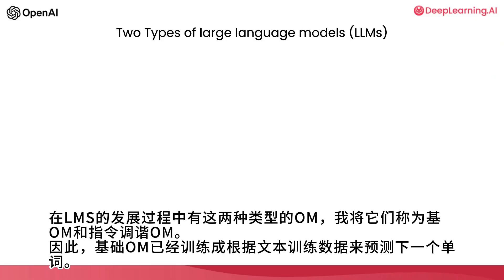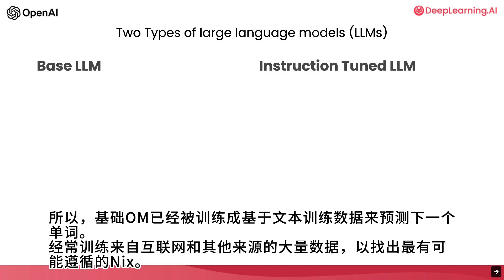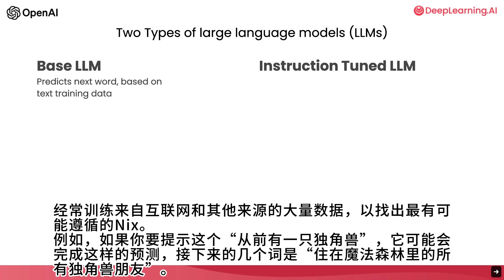In the development of large language models, or LLMs, there have been broadly two types of LLMs, which I'm going to refer to as base LLMs and instruction-tuned LLMs. Base LLMs have been trained to predict the next word based on text training data, often trained on a large amount of data from the internet and other sources to figure out what's the next most likely word to follow.